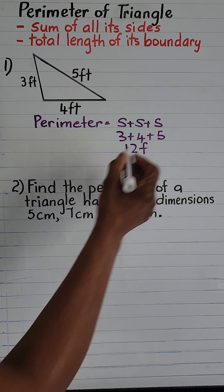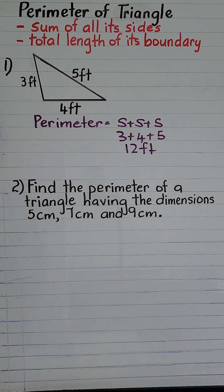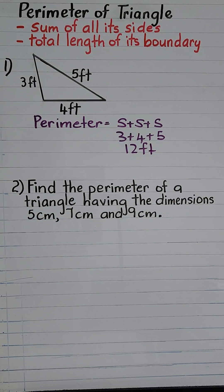So therefore, the perimeter of a triangle with sides three feet, four feet, and five feet, we add the measurement of the three sides to find the perimeter.